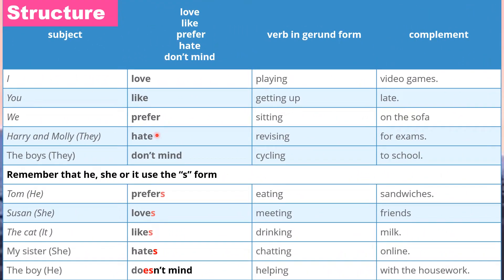Look at this table. You can see verbs: love, like, prefer, hate, don't mind — and with S: prefers, loves, likes, hates, doesn't mind. If the subject is plural, the verb does not have S. If the subject is singular, the verb must have S. Plural subjects: I, you, we, they — no S on the verb. Singular subjects: he, she, it — the verb must have S. And after these verbs, whether with S or no S, the verb that follows must have -ing.